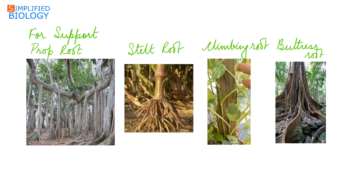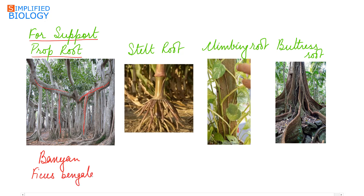Next is modification of adventitious roots for support. First are prop roots. Prop roots develop on the branches of trees and grow vertically downwards, giving support to the huge branches of the trees. Best example: the banyan tree, Ficus bengalensis. Next are stilt roots. Stilt roots develop from the lower nodes of the stem, growing obliquely downwards, helping the stem to stay erect. They are seen in maize and sugarcane.